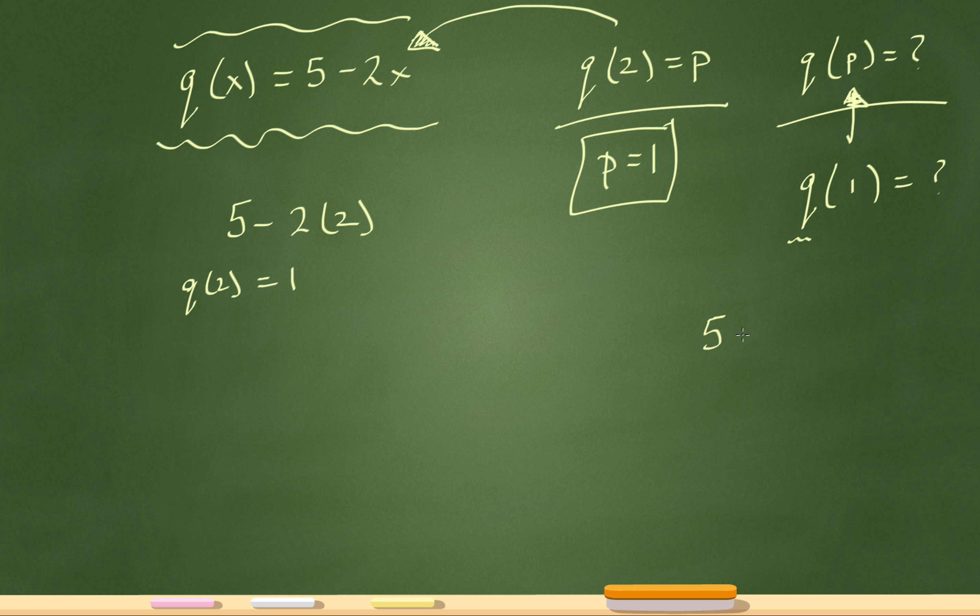So now it'll just be 5 minus 2 times 1. 2 times 1 is 2. 5 minus 2 is 3. So I know that q of 1 is equal to 3. That's my final answer.